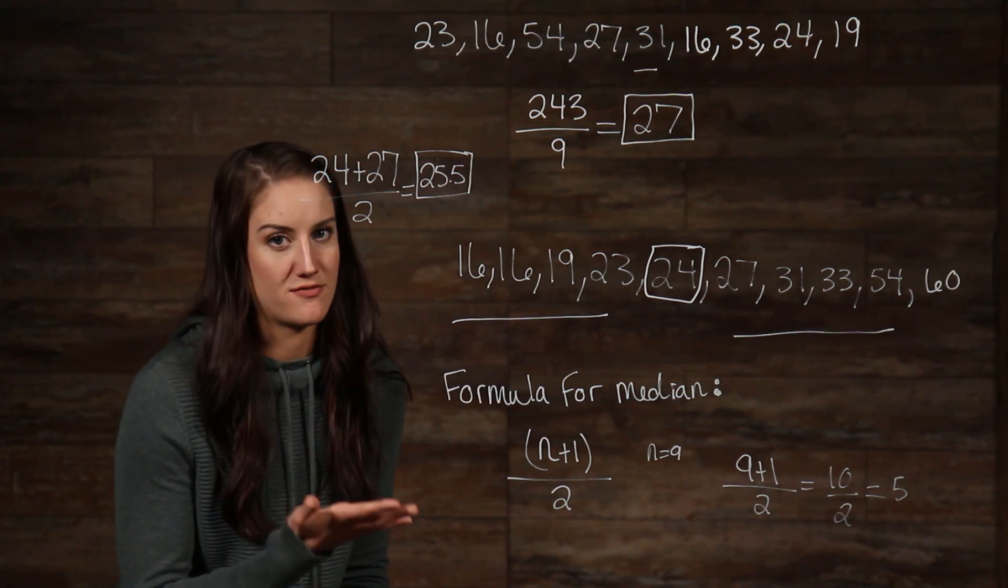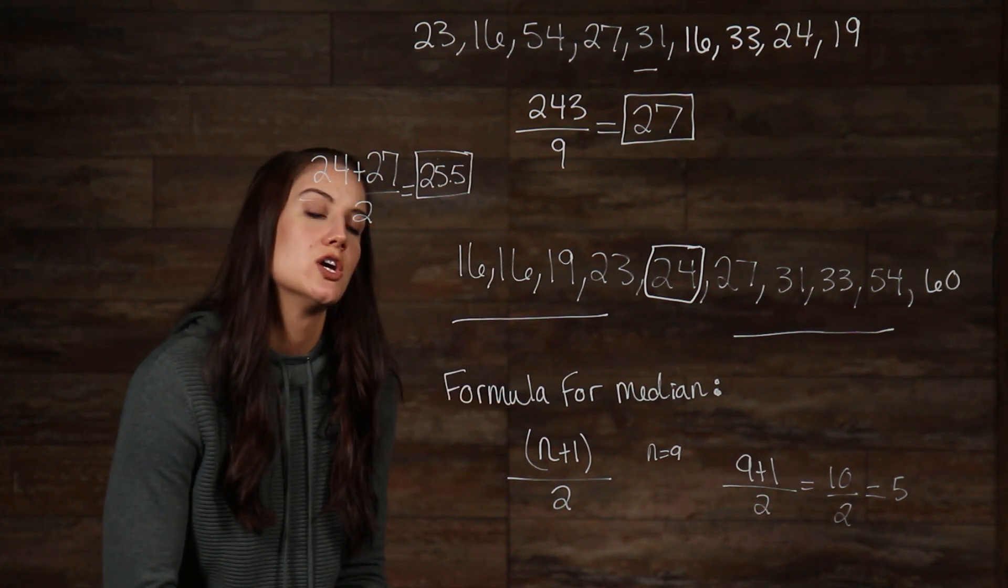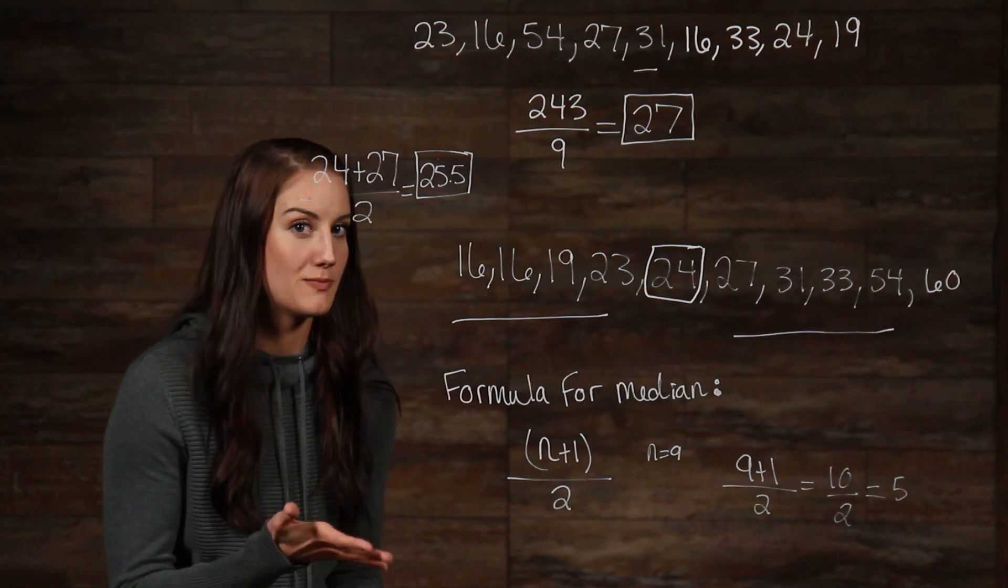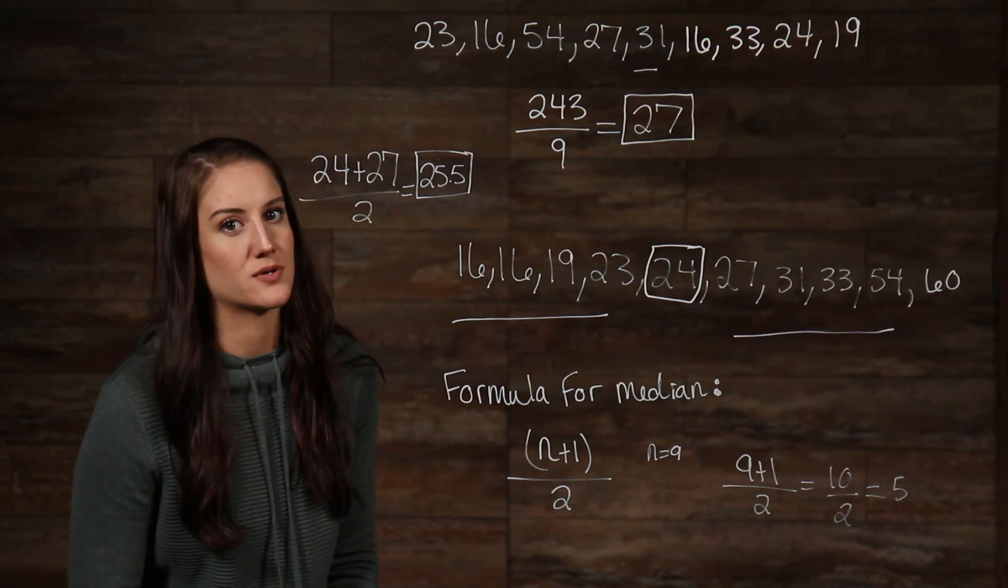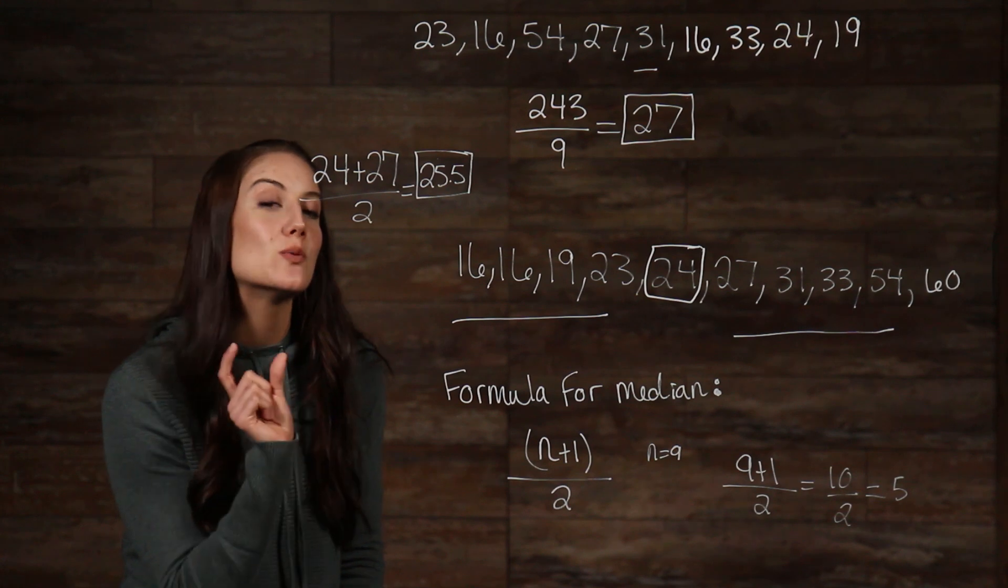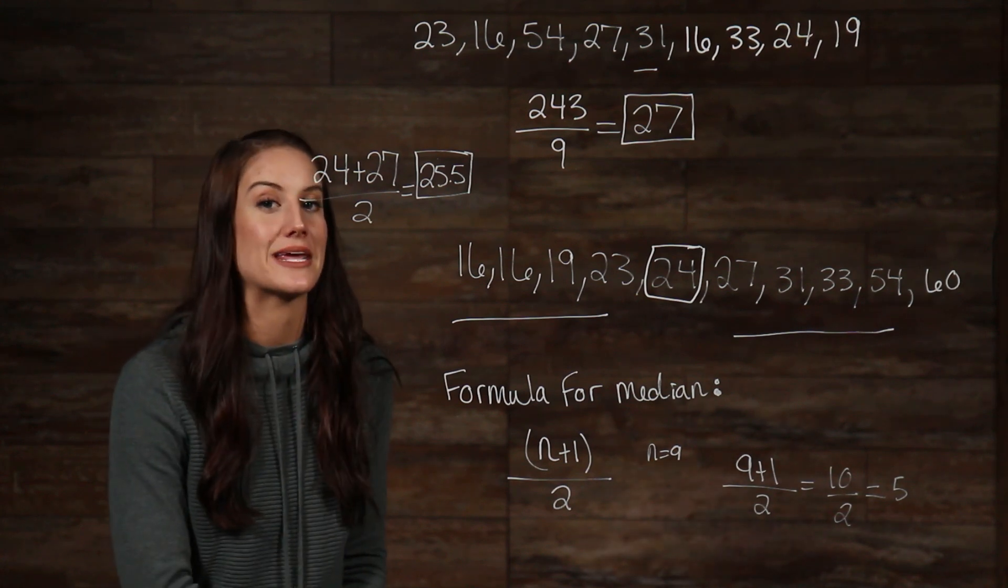Remember, when you have an odd amount of numbers, like in our example here, you just take the number in the middle and that's your median. But, when you have an even amount of numbers, you have to take the two middle-most numbers and then take their mean to get your median.